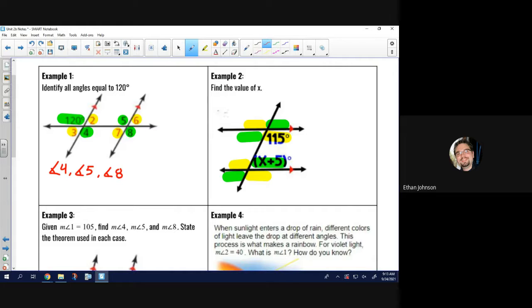So, now I'm going to read the problem. It says, find the value of x. Now, looking at it, I see the 115 is in yellow, the x plus 5 is in green. They're different colors. So, that tells me they add up to 180 degrees. So, I know x plus 5 plus 115 equals 180. To solve, I'll combine like terms. So, x plus 120 equals 180. Subtract 120 from both sides. And we get x equals 60.